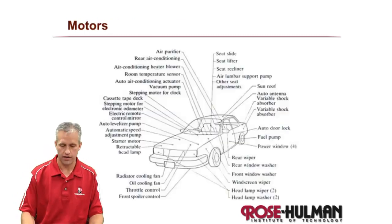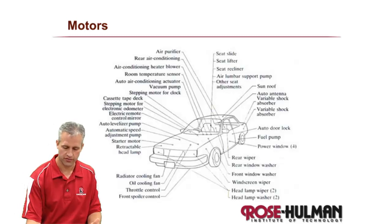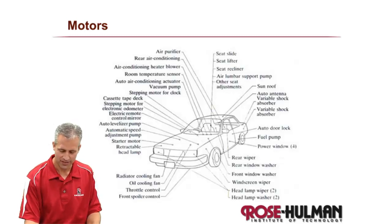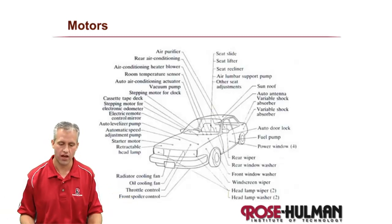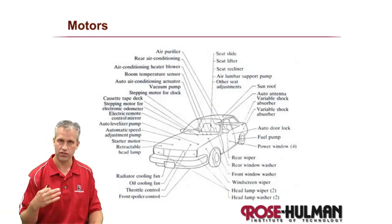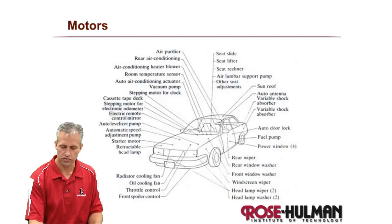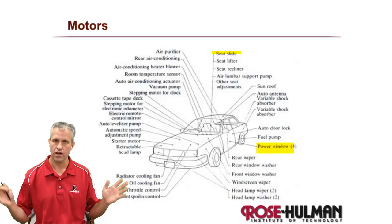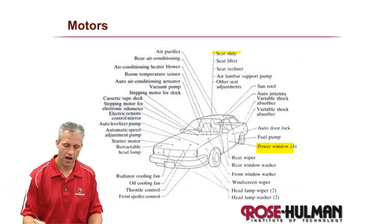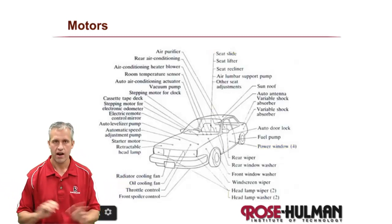Welcome back. Today we're going to talk about motors. This picture is very outdated — you can see things like cassette tapes — but the point is that motors are all around us. If you look at just a car, obviously there's the engine, but there are also all kinds of small automotive motors, from window sliders to door locks.